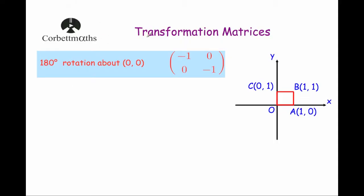Hi, welcome to this Corporal Maths video on transformation matrices. In this video we're going to focus on the transformation matrix which is the 180 degrees rotation about the origin. And that's the matrix minus 1, 0, 0, minus 1. So here we've got the unit square and we're going to multiply each of these points by the matrix to show that that matrix is 180 degrees rotation about the origin.